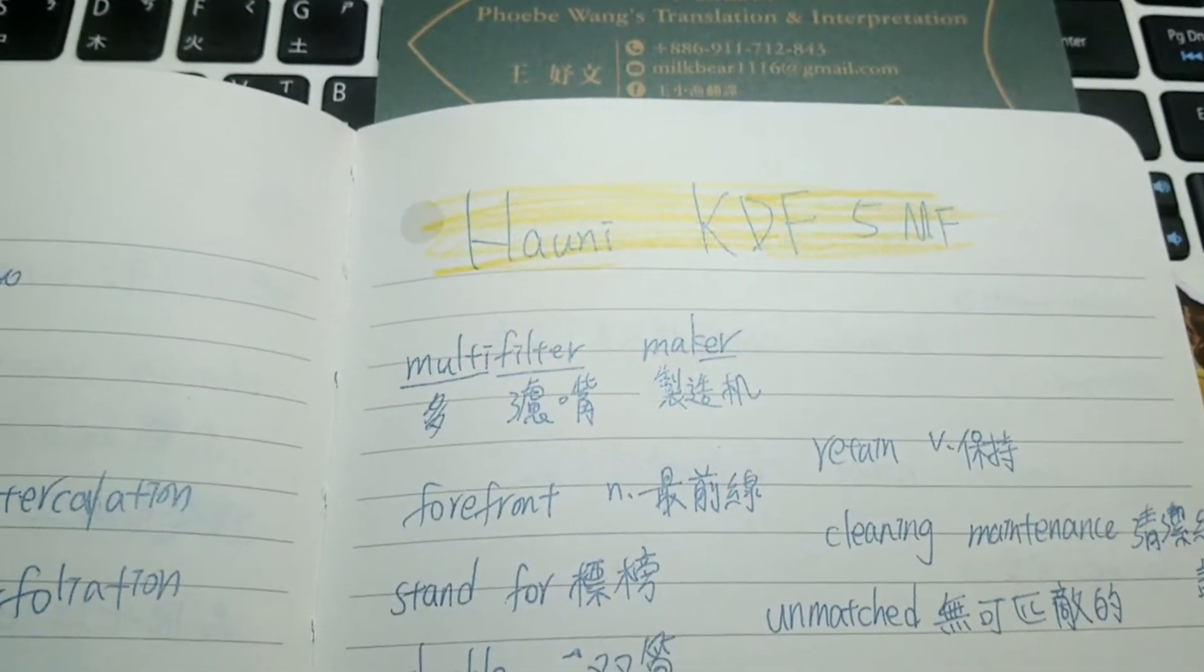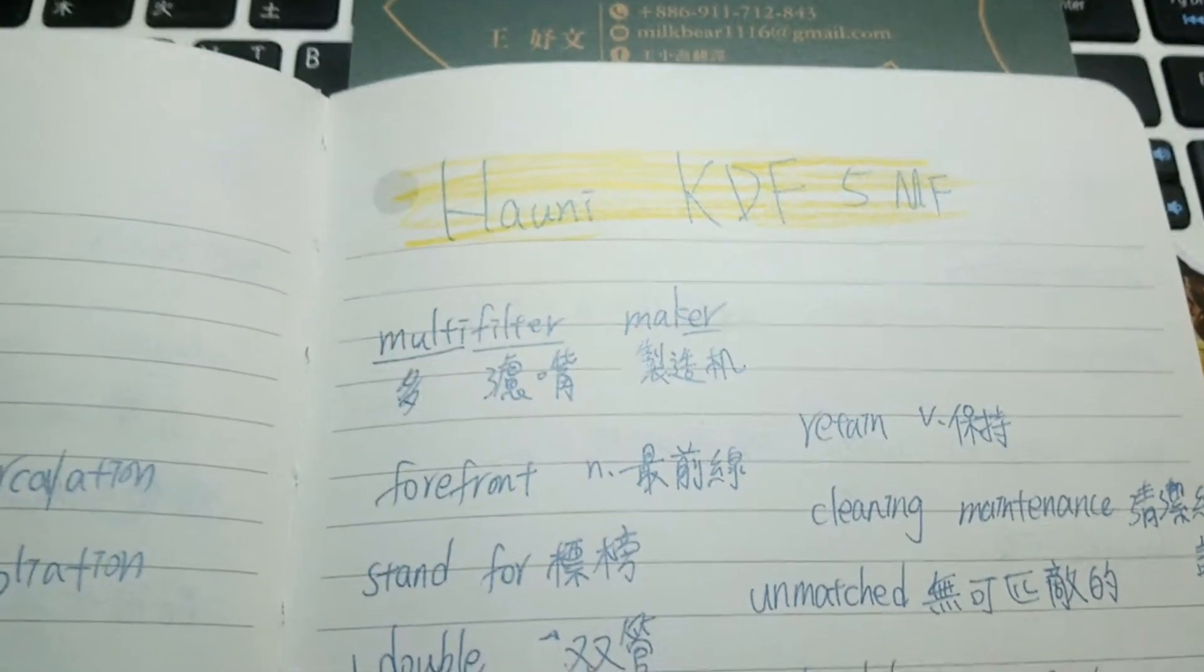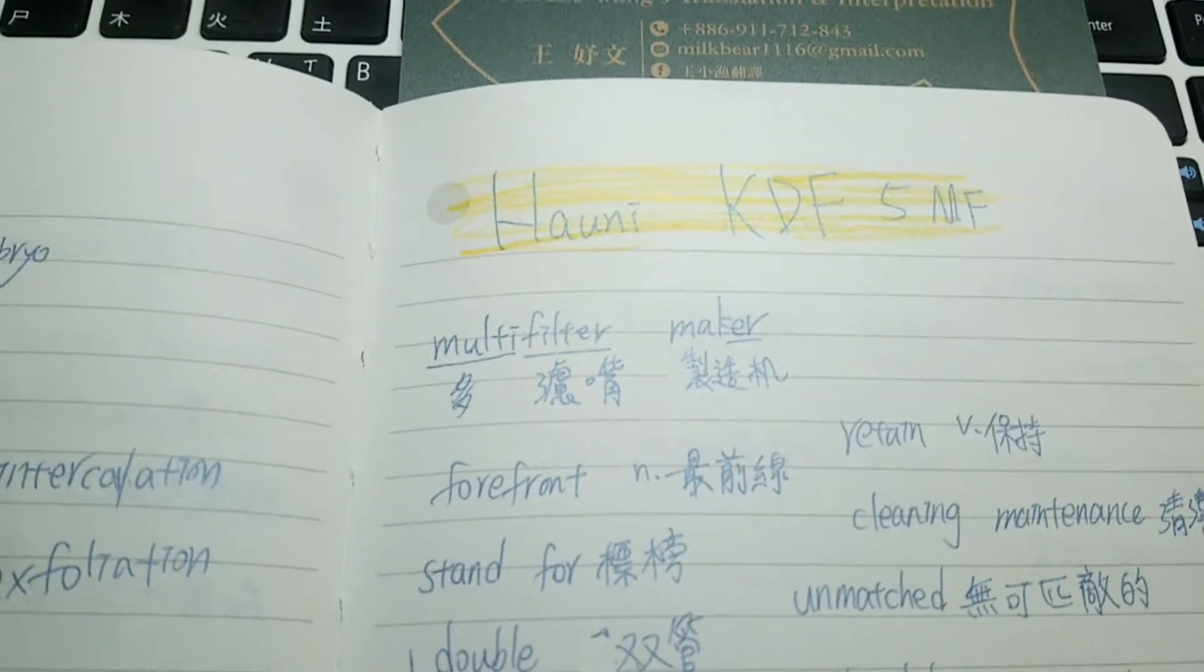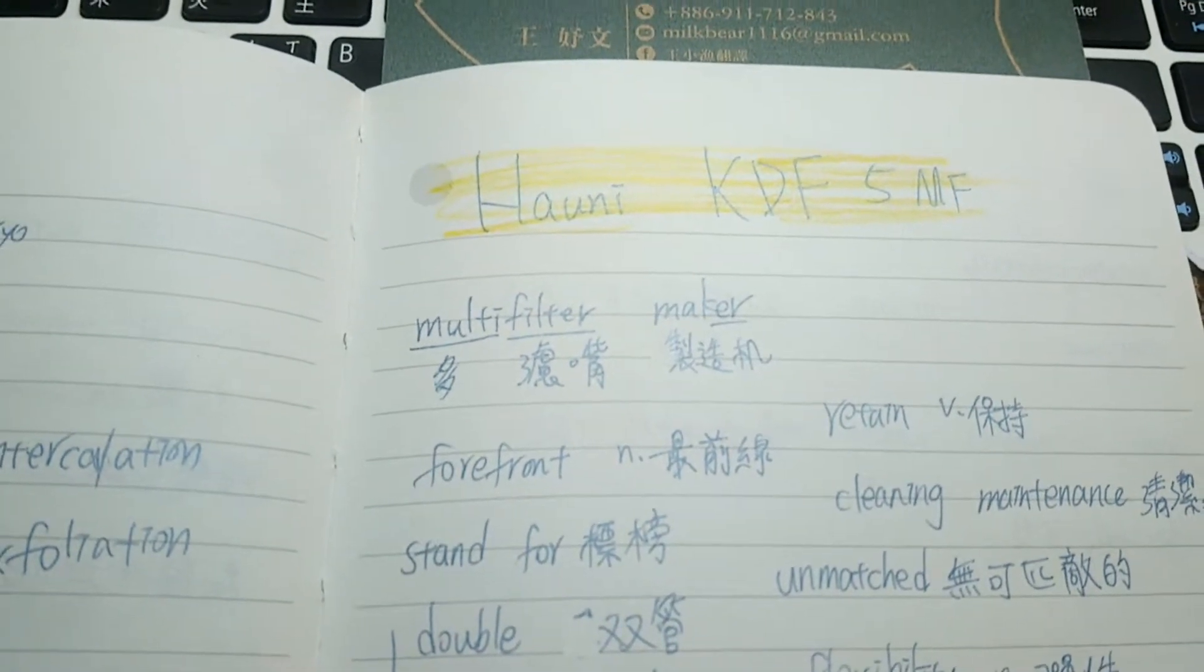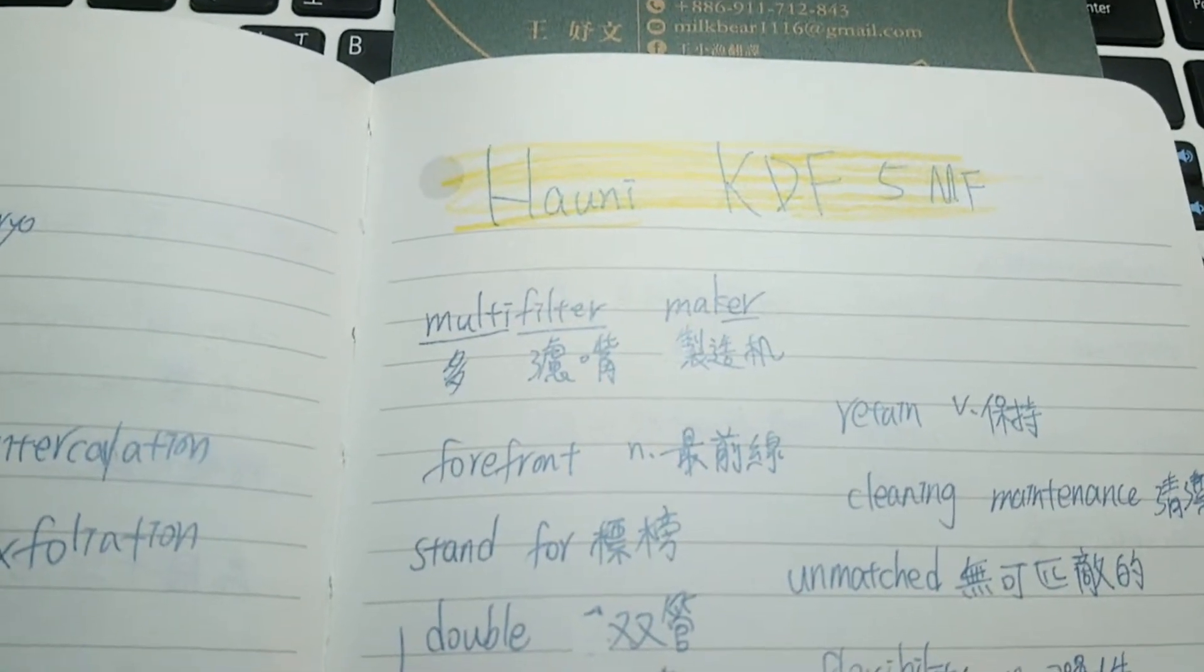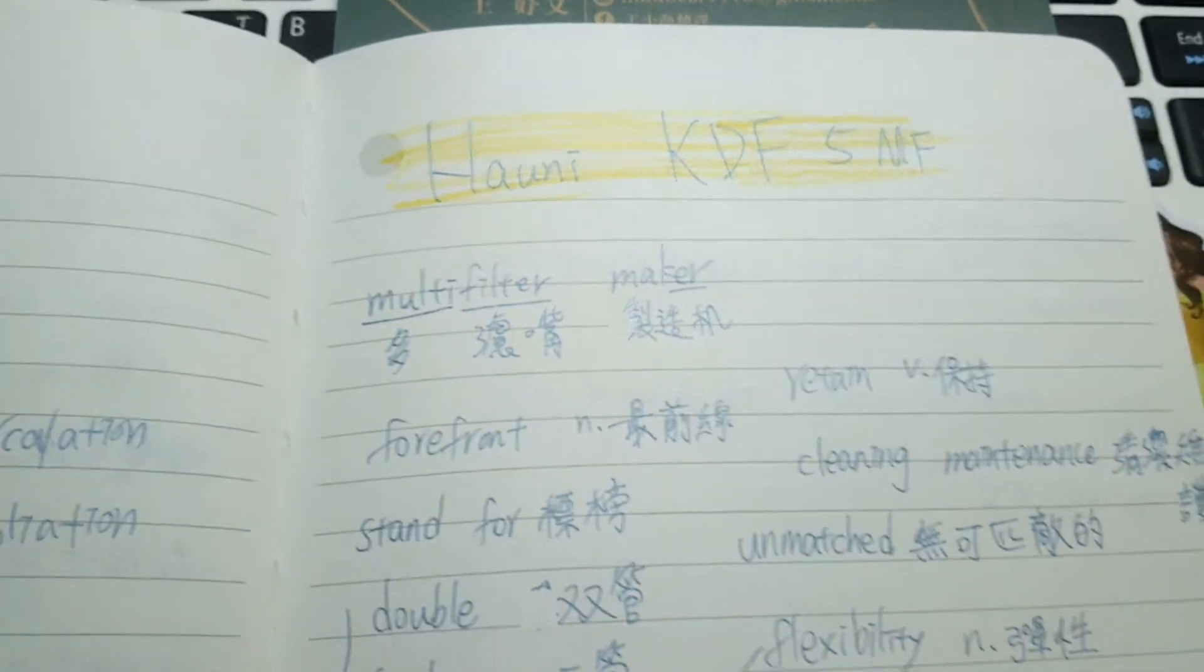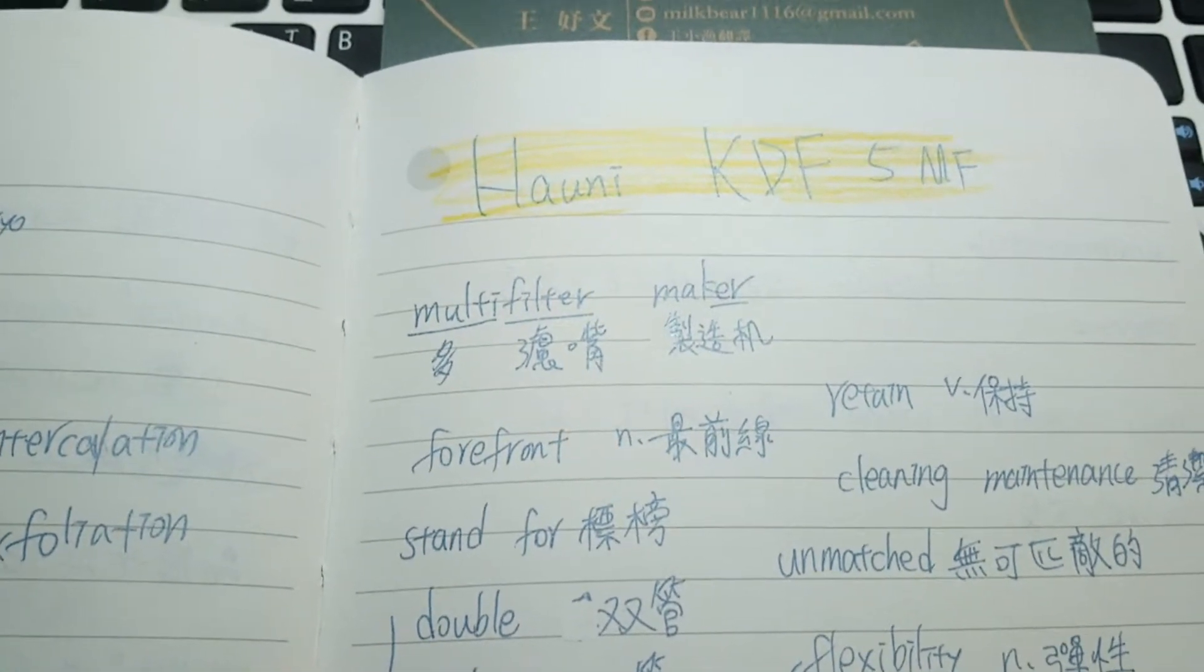That's why large as well as small-scale cigarette and filter manufacturers need to be able to change between formats, filter length and diameter as fast as possible. 这就是为什么大规模、小规模的香烟还有滤嘴的制造商就是要有办法能够快速地转换在滤嘴长度直径的格式之间,尽可能快速转换。